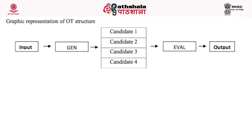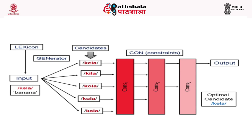In the graphic representation of the OT structure, there is an input from the lexicon which goes to the generator. The generator accepts the input and forms different potential candidates — candidates 1, 2, 3, and 4 — which go to the evaluator. The evaluator, based upon the constraint ranking and the constraints in hand, evaluates the most optimal candidate, giving us the output. There is also a graphic representation for the Hindi word 'kela' (banana), showing how OT works: how it goes to the generator, how candidates are generated — five candidates with different constraints — and finally the optimal output is chosen.